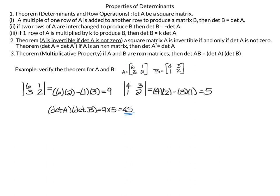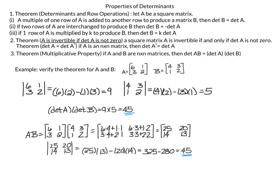The determinant of A = [6, 3; 1, 2] is 6×2 − 1×3 = 9. The determinant of B = [4, 1; 3, 2] is 4×2 − 3×1 = 5. So det(A)×det(B) = 45. Computing AB gives [25, 14; 20, 13]. The determinant of AB is 25×13 − 20×14 = 325 − 280 = 45, verifying the multiplicative property.